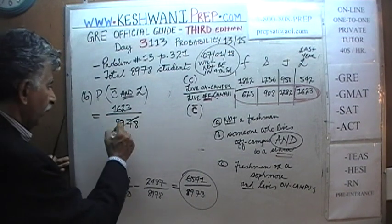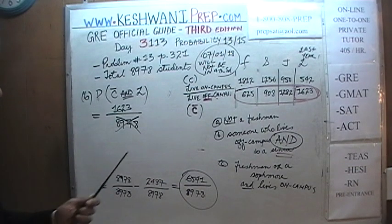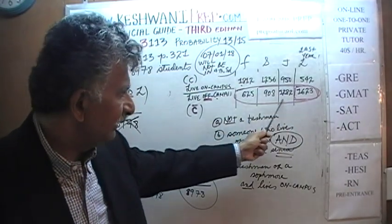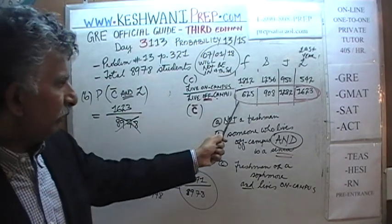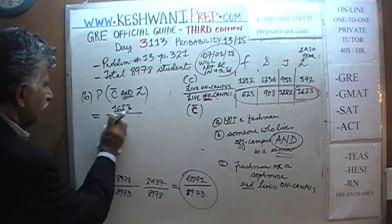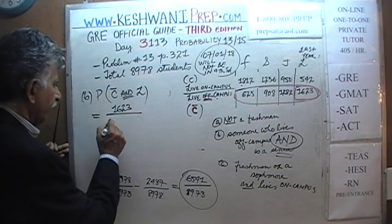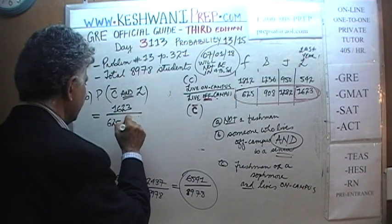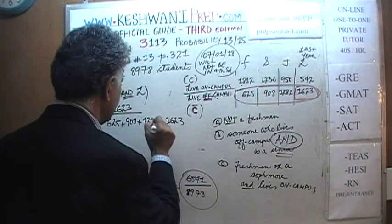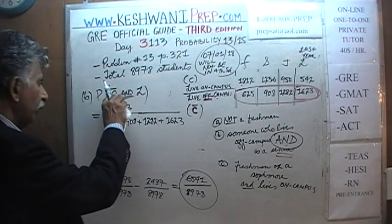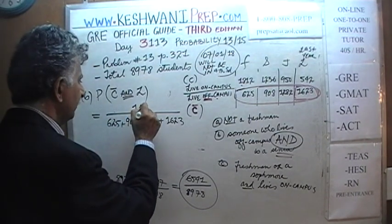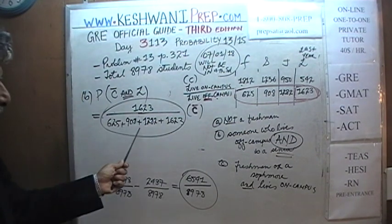8,978 — that would be one of the answer choices in the exam, but the answer is no. We are looking for people who live off campus. If you were to pick somebody who lives off campus, these are the people who live off campus, not all the people. Out of all the people who live off campus — which is this amount — the bottom here should be the sum of those four numbers: 625 plus 908 plus 1,282 plus 1,623.